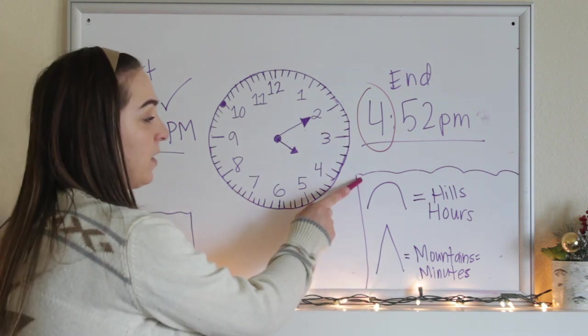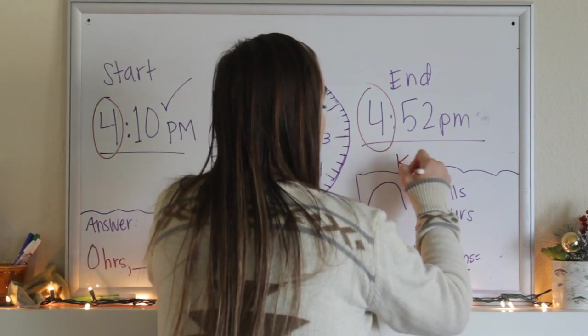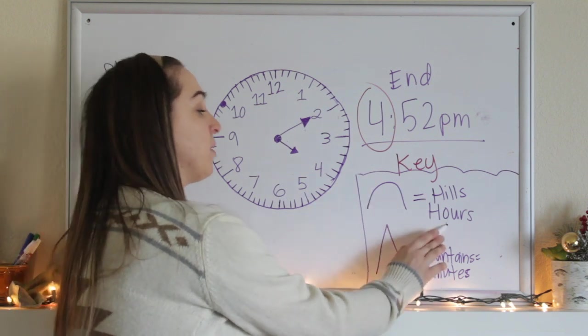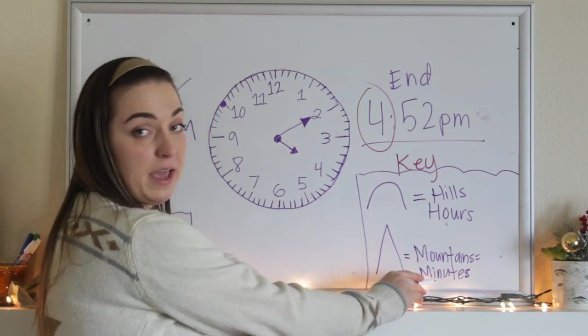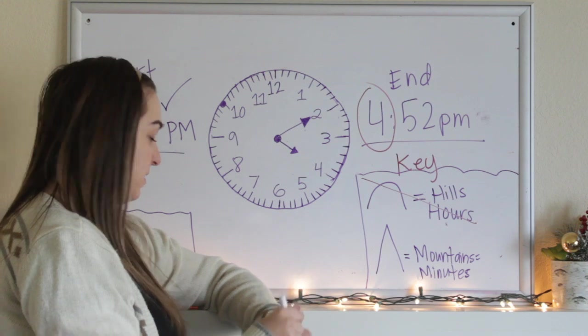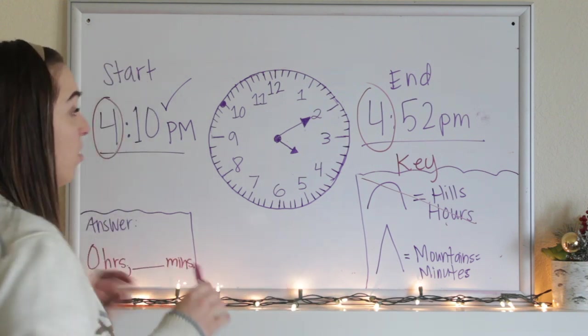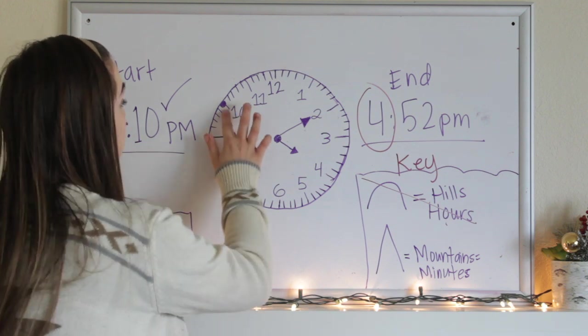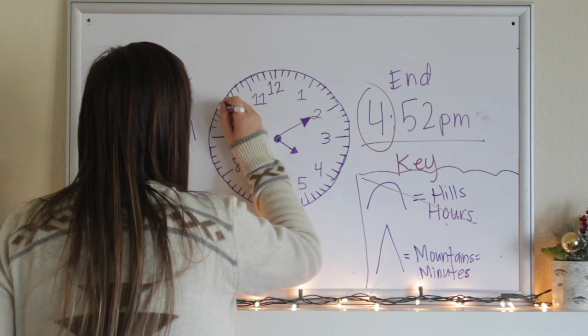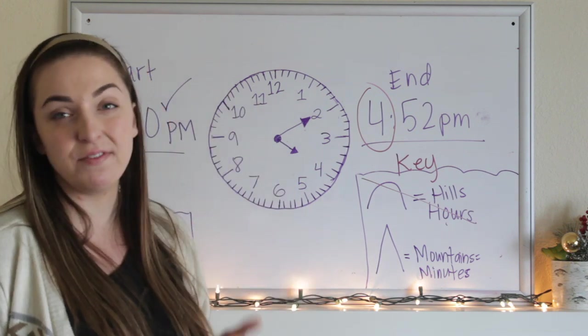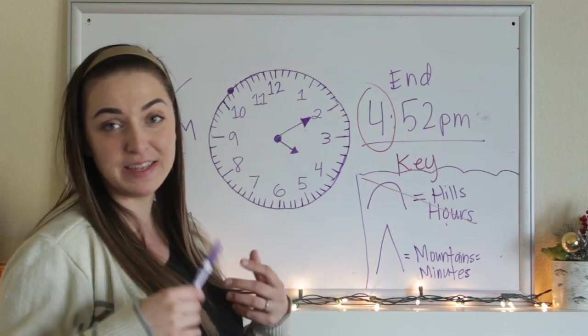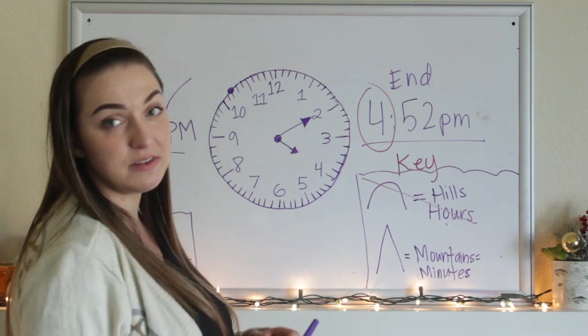Zero hours. We need to figure out how many minutes. So in our key down here, I have written out some things for you guys. We're going to use these hills for hours and these spiking mountains for minutes when we're counting. We don't have any hours, so we don't need to use that, but we do need to use the mountains for minutes. So in order to even know where to begin here, we need to figure out where 52 is on the clock. So let's go ahead and think this through. If I'm looking at minutes and I need to find 52, I need to count by 5 starting at 1 again. I'm going to count by 5s until I get to 52. Let's see how this works.